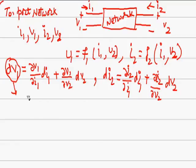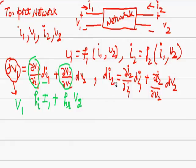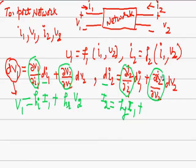We are writing these two equations for sinusoidal change. For sinusoidal change, we write DV1 as V1, partial V1 partial I1 as HI, DI1 as I1, partial V1 partial V2 as HR, DV2 as V2. DI2 as I2, partial I2 partial I1 as HF, DI1 as I1, and partial I2 partial V2 written as HO, DV2 as V2.